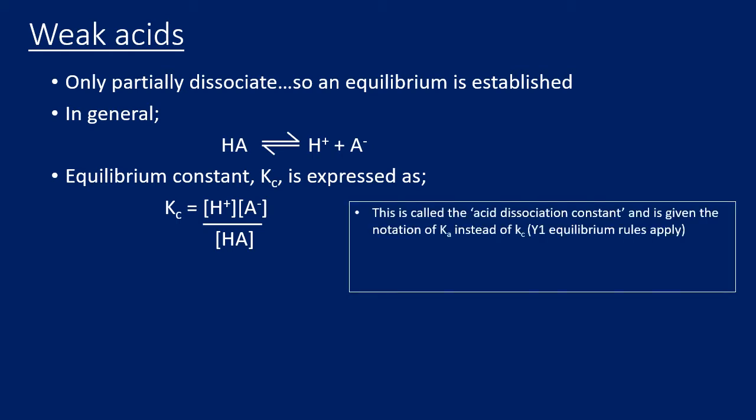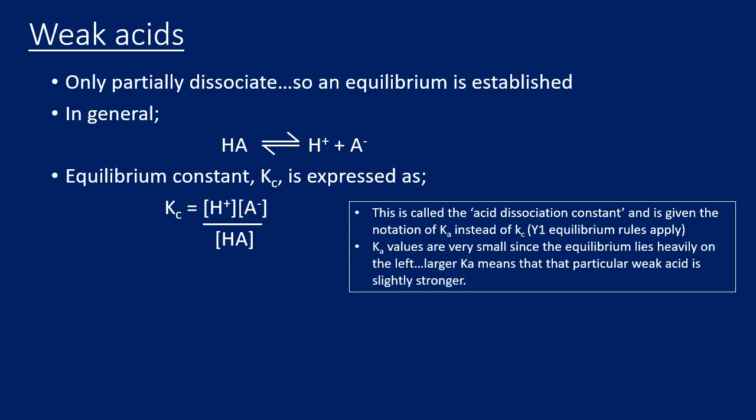This is called the acid dissociation constant — Ka instead of Kc. It's the same thing; the same rules apply exactly. It's just because it's a weak acid we call it the acid dissociation constant. The same rules apply for equilibrium in terms of shifting right or left and changing conditions. A larger equilibrium constant means the equilibrium lies further to the right.